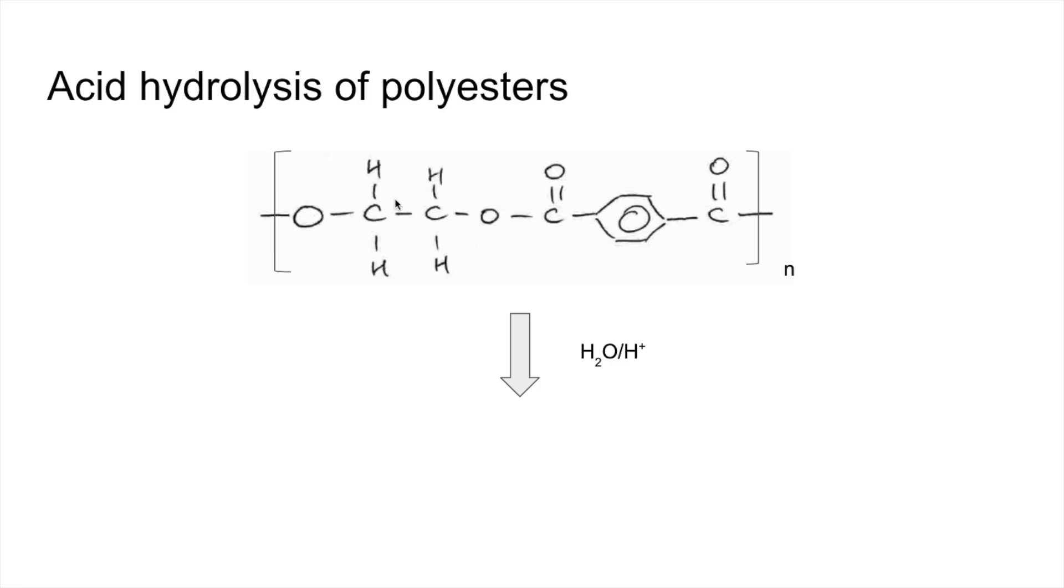Starting with the acid hydrolysis of polyesters. As you can see here, we've got the ester bond that's joining the two monomers together. This would have been a dicarboxylic acid, this would have been a diol. So H2O from the aqueous acid is going to break that ester bond. The diol will be reformed and the dicarboxylic acid will be reformed. The OH from the water goes there and there, the H from the water goes there and there.